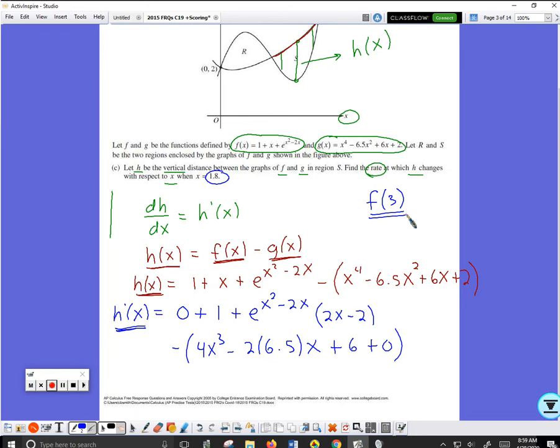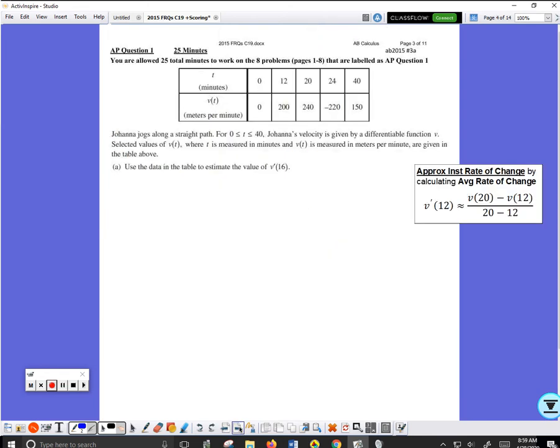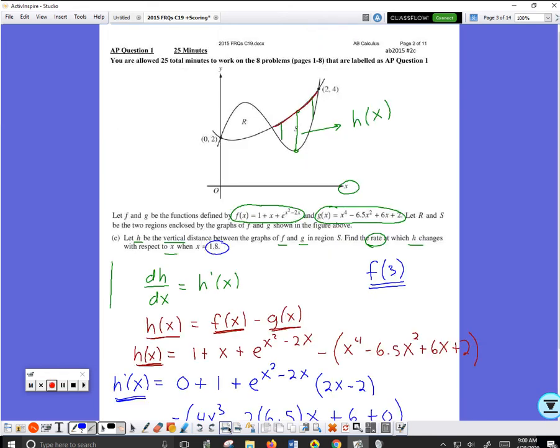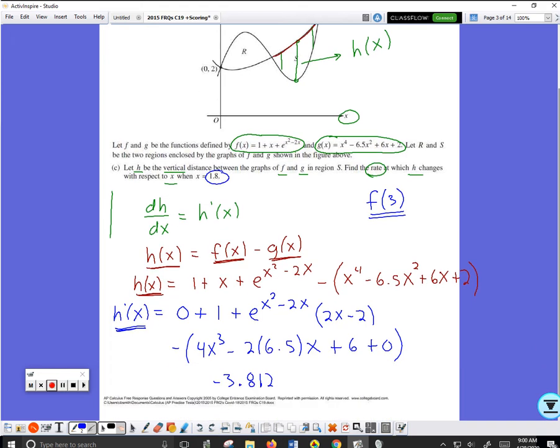The final result on this ends up being negative 3.812. So if you did it on your calculator, this is the value you should be getting.